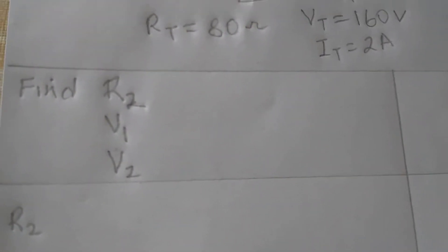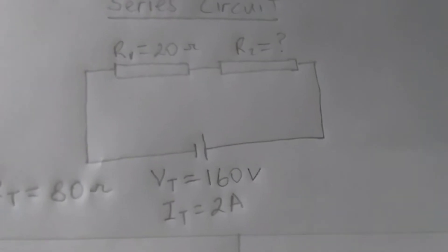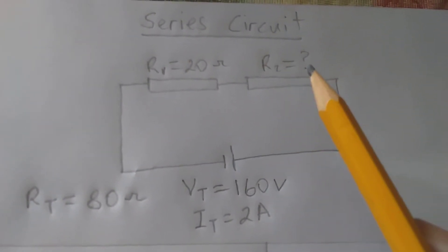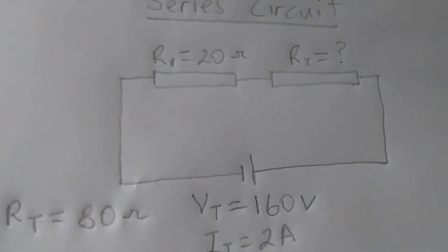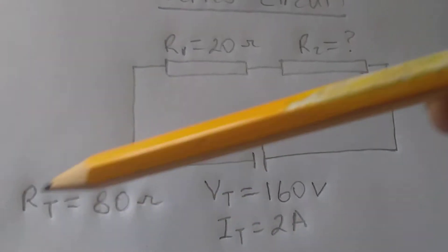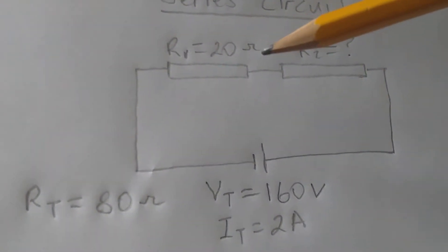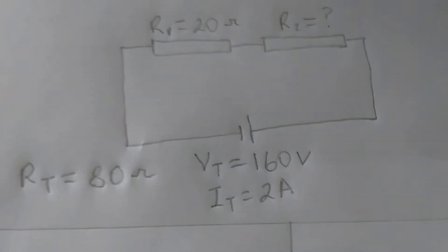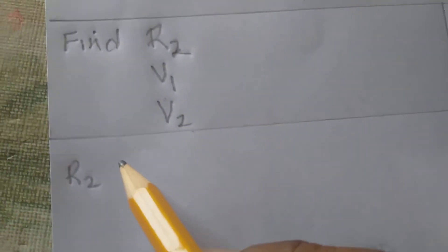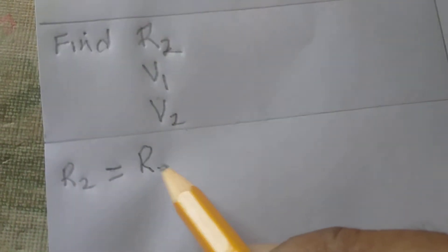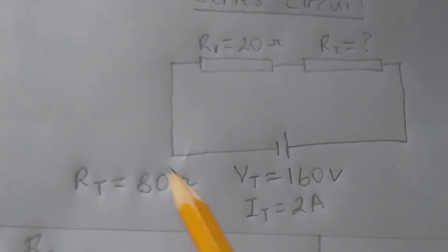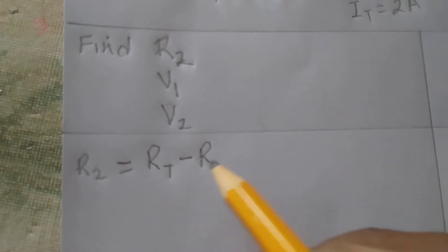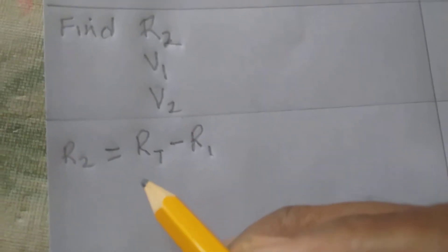The first thing we're going to find is resistor R2. To find R2, we know that R1 plus R2 equals RT, which is 80 ohms. So we need a formula where R2 equals RT minus R1. If we take away the R1 value from the RT value, we end up with R2. RT is 80 ohms, so we put 80 here.